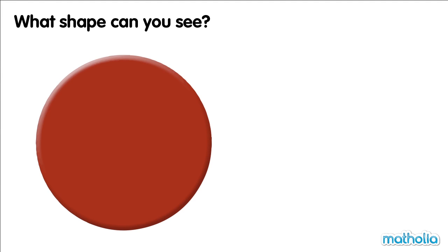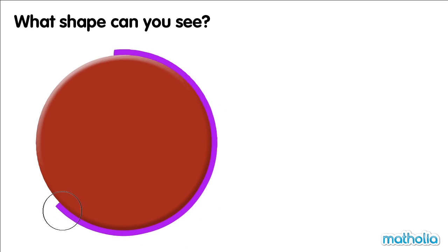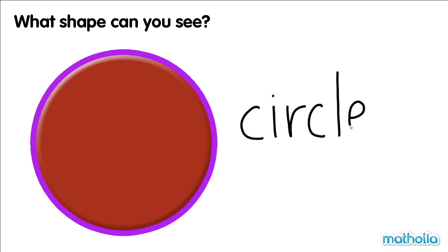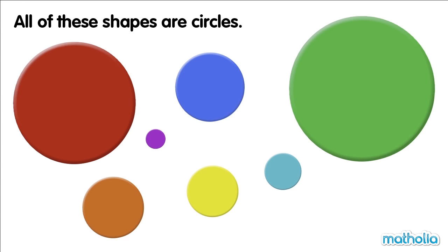What shape can you see? This shape is round. This shape is a circle. Circle. All of these shapes are circles.